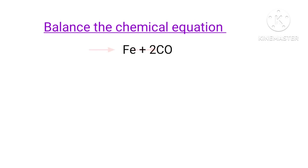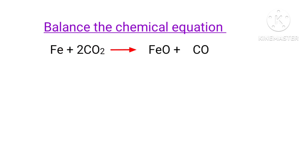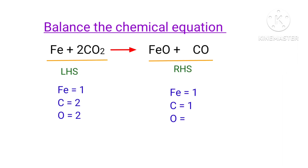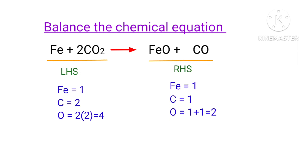Balance the chemical equation: Fe + CO₂ gives us FeO + CO. In this equation, the left-hand side has one ferrous atom, two carbon atoms, and four oxygen atoms present.